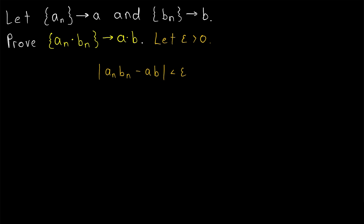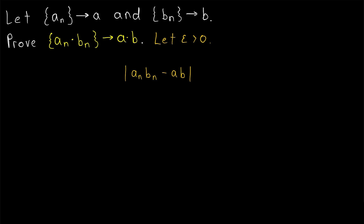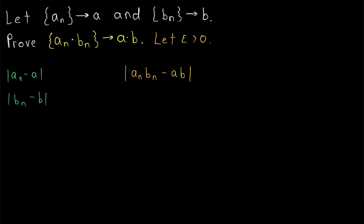To prove our previous limit laws, we related an expression like this to some expressions that we knew we could make arbitrarily small. Since we know aₙ converges to a, we can make |aₙ - a| as small as we want. Similarly, we can make |bₙ - b| as small as we want. For previous limit laws we used the triangle inequality to relate these, but it's not so obvious right now how we could do that.